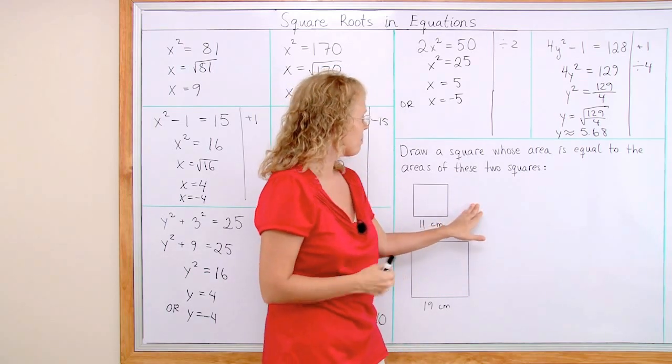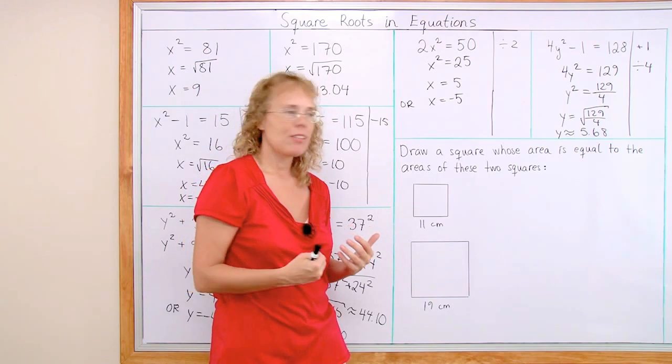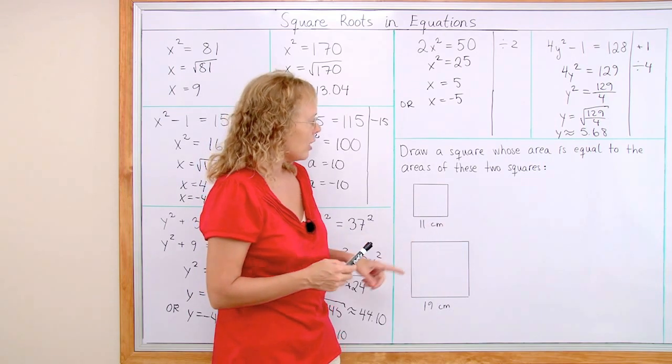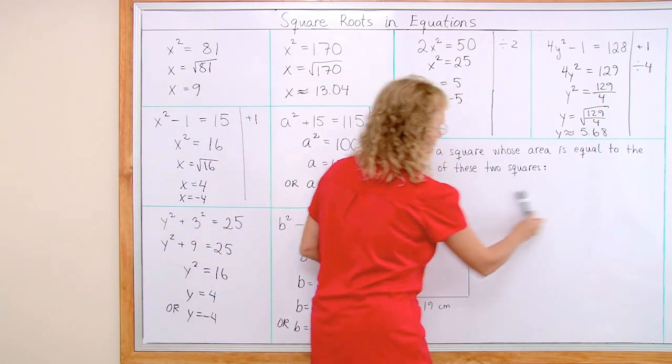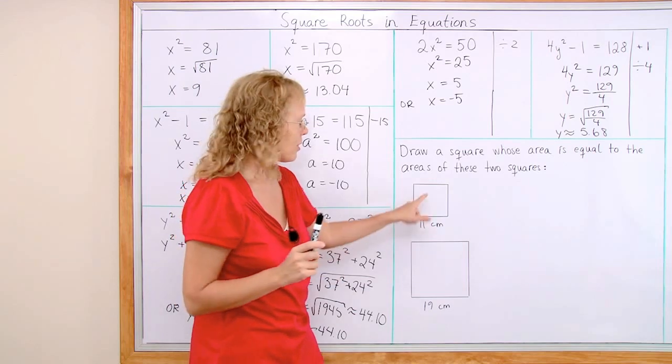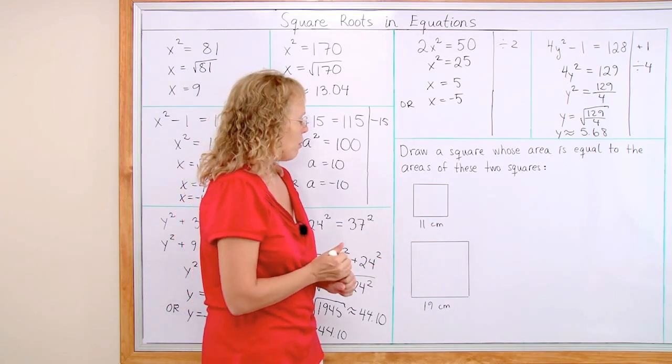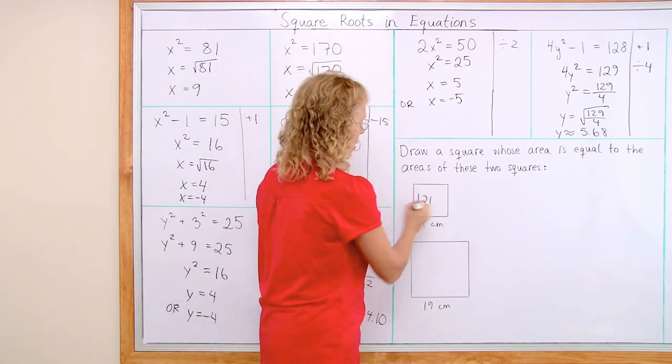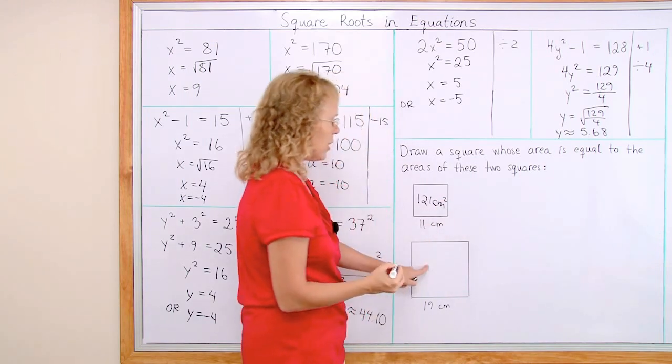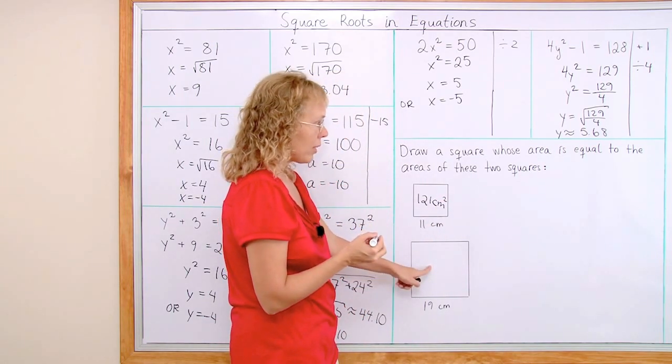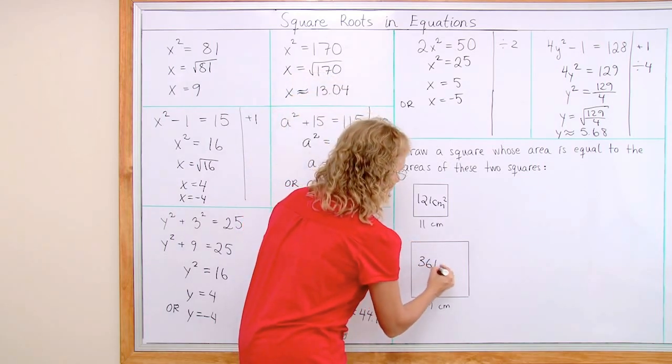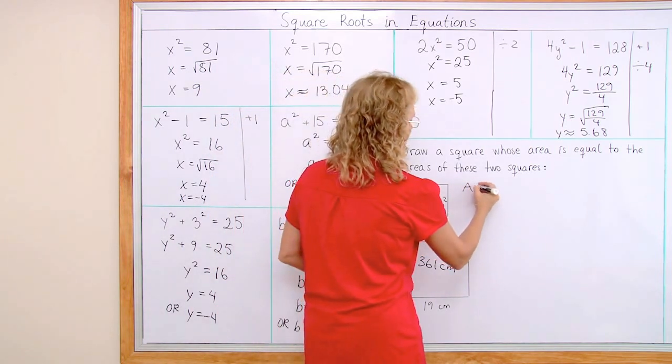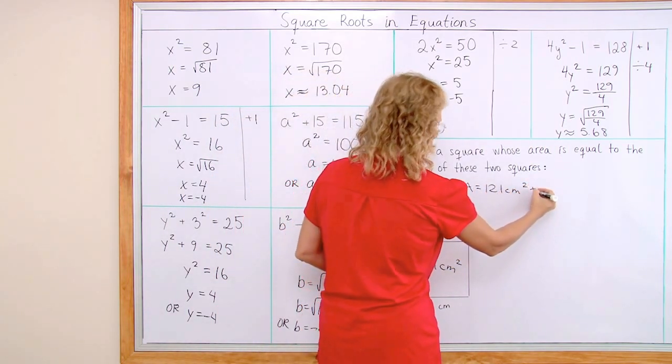Now here is a typical application or problem where this kind of thing can be useful. Draw a square whose area is equal to the areas of these two squares. In other words draw a square here so that its area is the sum of these two areas. Well to start I might want to calculate the square. It would be 121 square centimeters. And this one would be 19 times 19, which is 361 square centimeters. So the area of my square has to be 482 square centimeters.